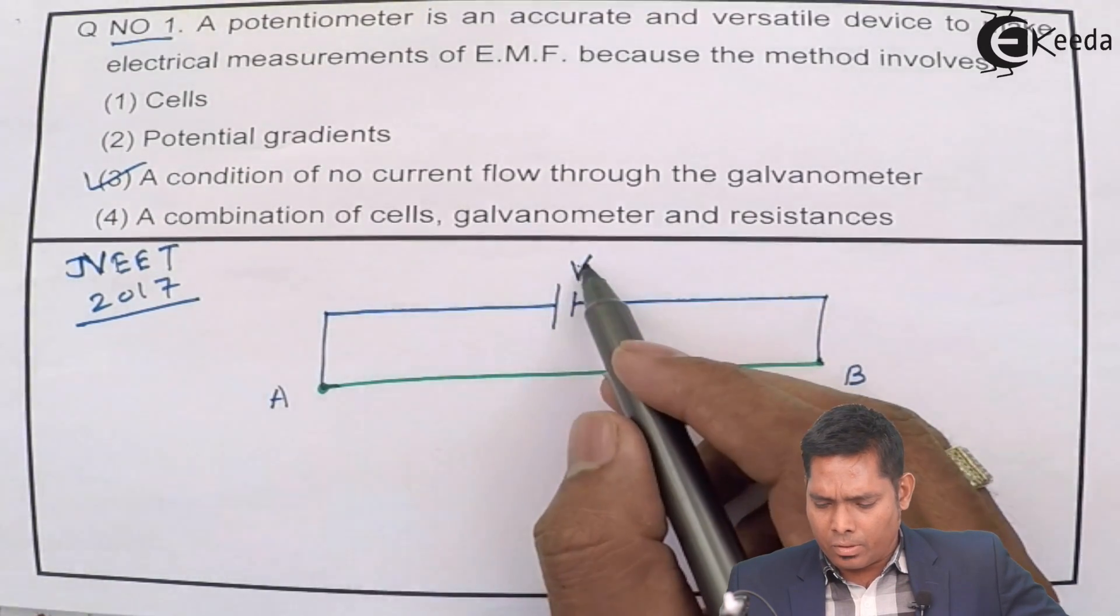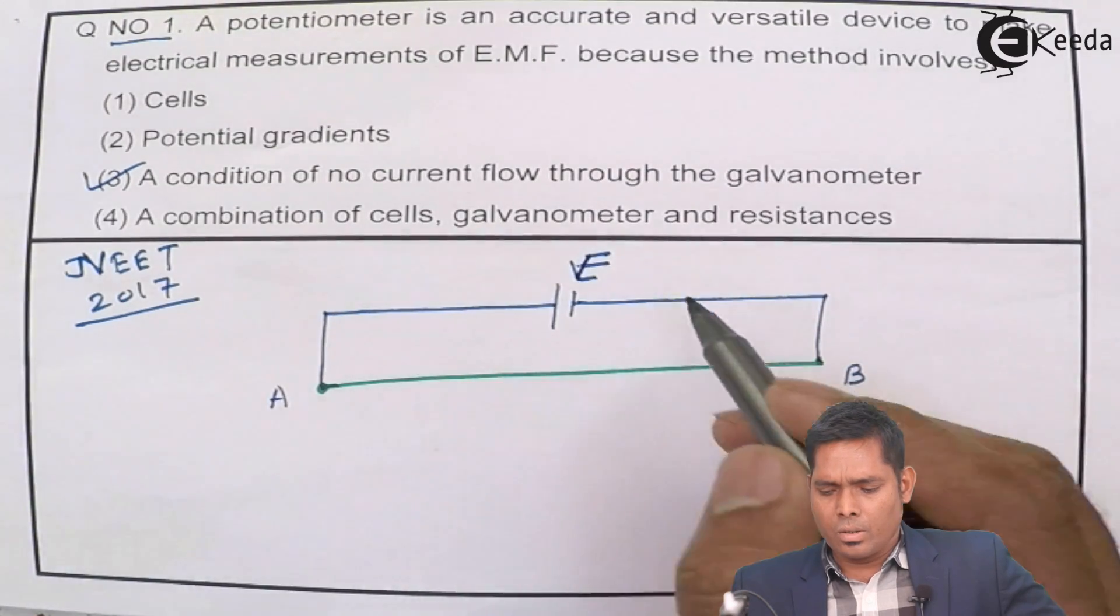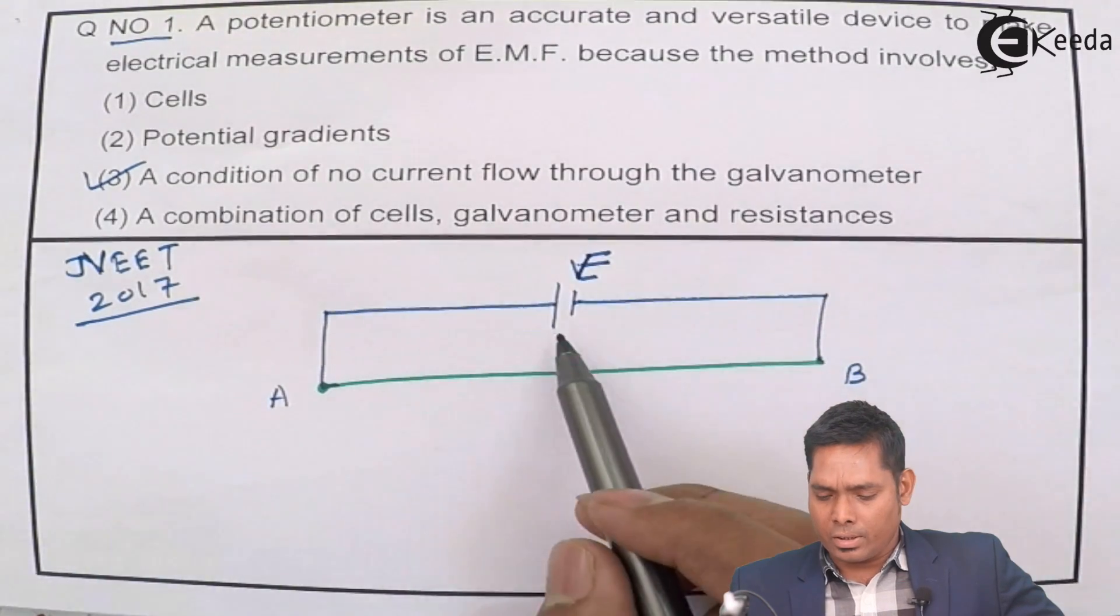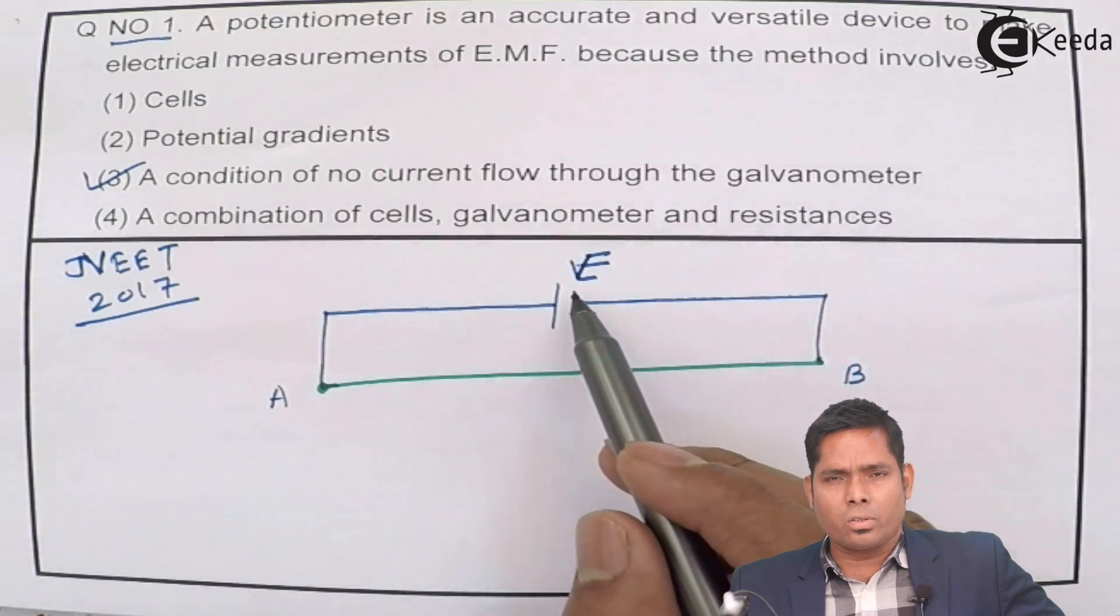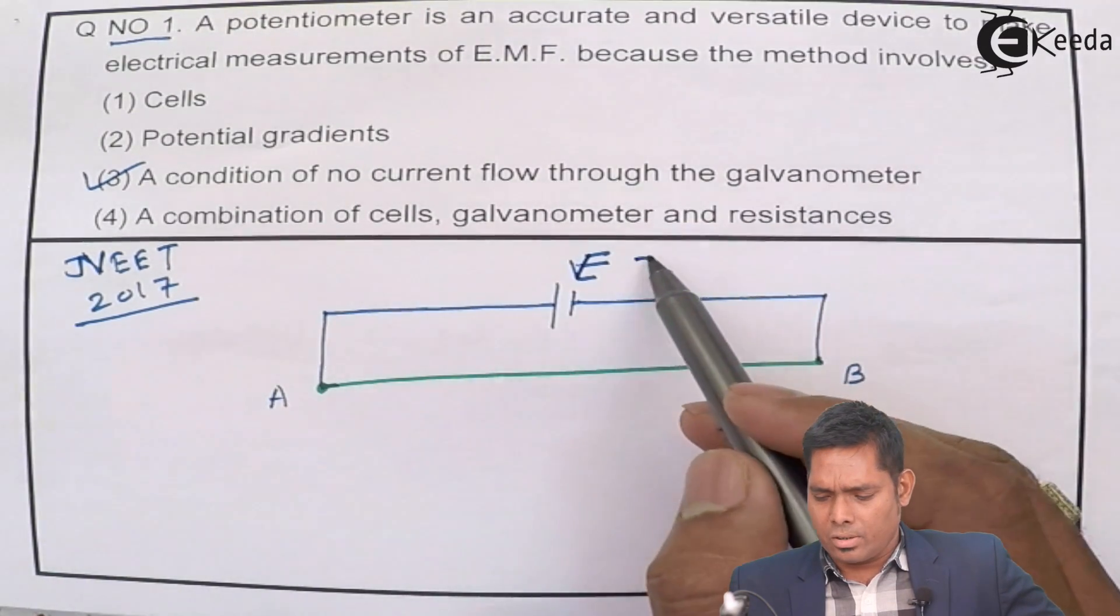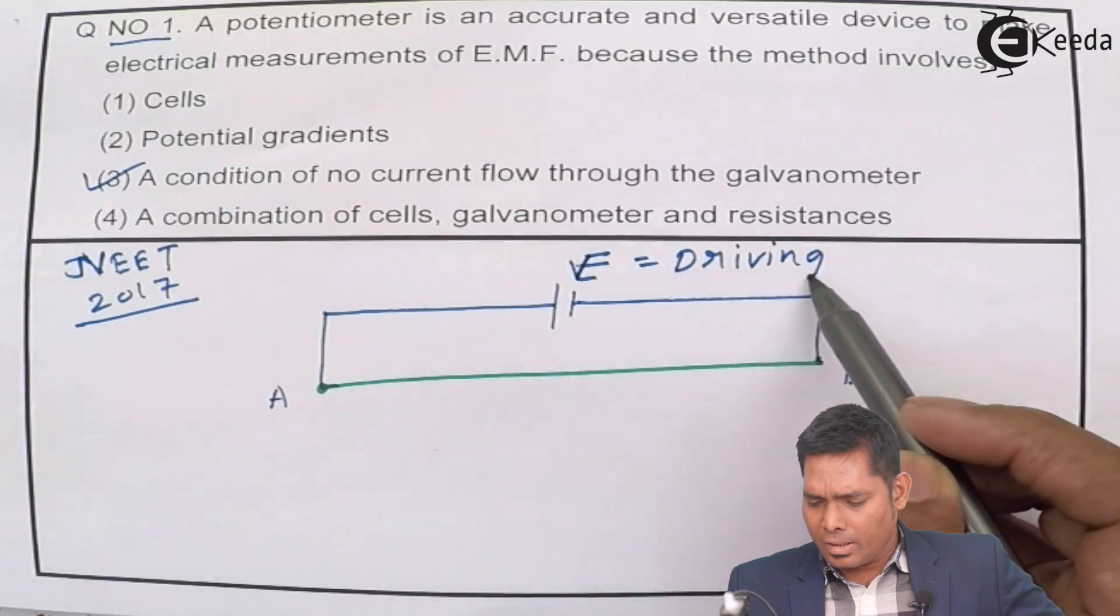the EMF is E over here. This is the EMF that is called the auxiliary battery, the driving cell. This is the driving cell.